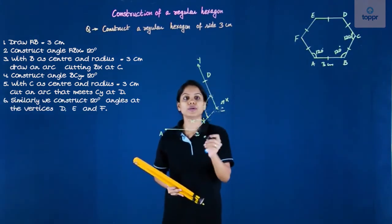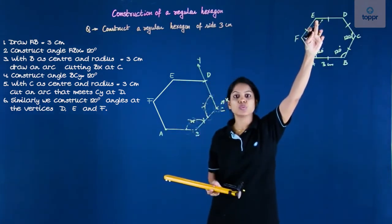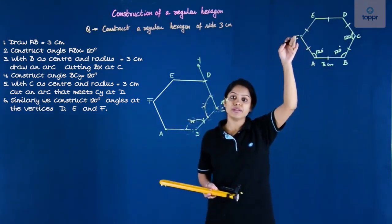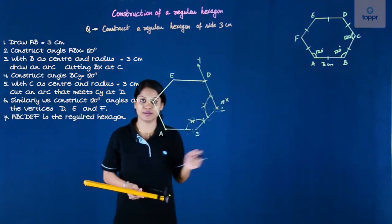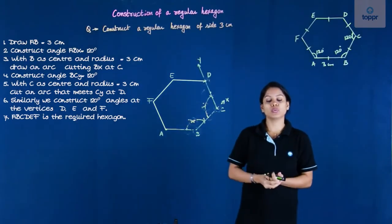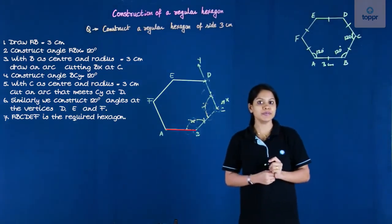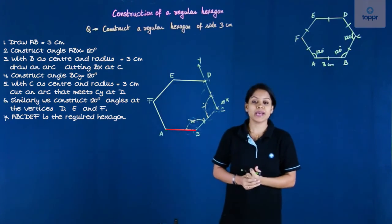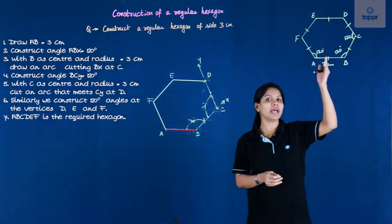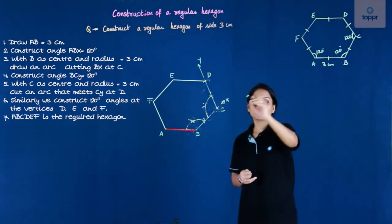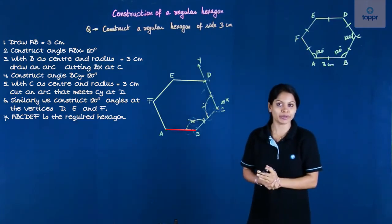In this manner, we are going to complete 120 degree at the next vertex to get the next vertex E and then F and then finally join all of it to get our regular hexagon. Let's have a quick look at what we did. We have started with the base AB, taken AB as 3 centimeters, and then we constructed 120 degree at the point B so that we have constructed the ray BX in such a manner that angle ABX is equal to 120 degree.